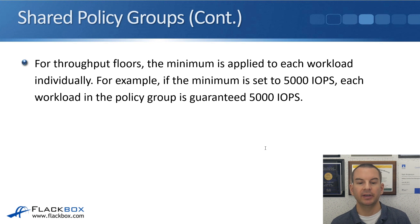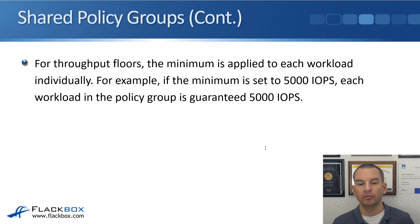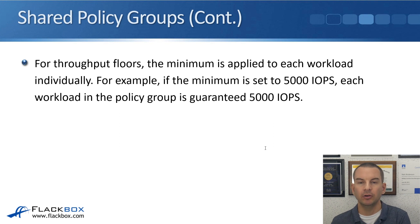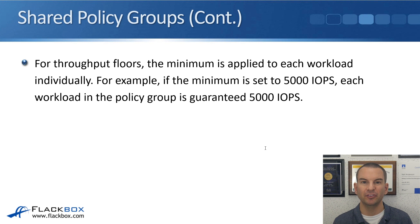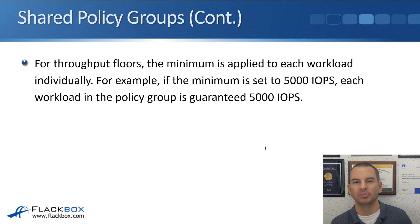For throughput floors rather than ceilings, the minimum is always applied to each workload individually. For example, if the minimum is set to 5,000 IOPS, each workload in the policy group is guaranteed 5,000 IOPS. Setting a shared throughput floor doesn't really make sense — you couldn't say a 5,000 IOPS minimum is shared between volumes, as it only makes sense when applied to individual workloads. So for throughput floors, it's always applied individually.